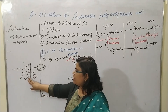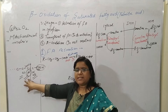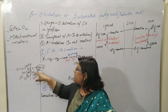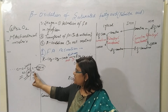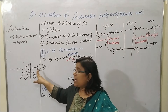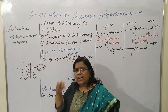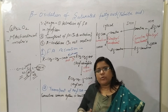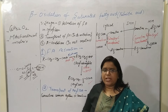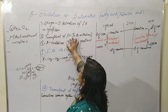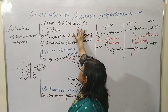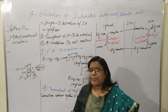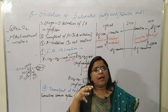Now you understand why it is called beta oxidation — because the beta carbon, which is just beside the alpha carbon attached to the functional group, is the site of oxidation. The stages of the beta oxidation pathway: the first step is the activation of the fatty acid. The fatty acid is activated with the help of ATP, and this happens in the cytosol.